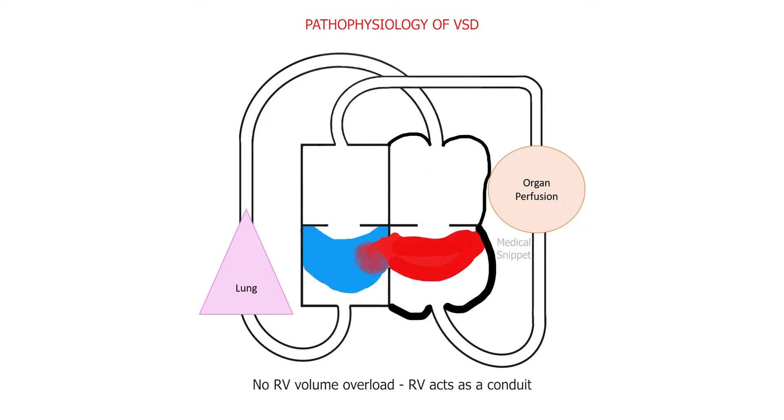as the right ventricle also contracts when the left ventricle contracts. Thus right ventricle acts as a conduit for the blood to reach the pulmonary artery. As the right ventricle pumps against increased pulmonary arterial pressure, there is right ventricular hypertrophy as the time progresses.